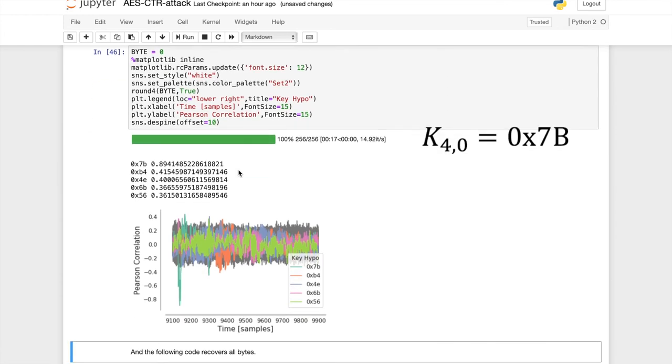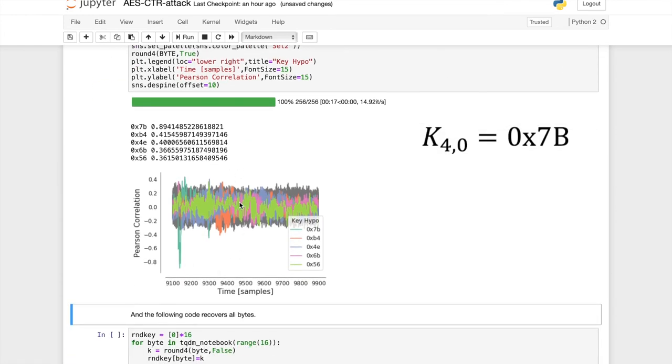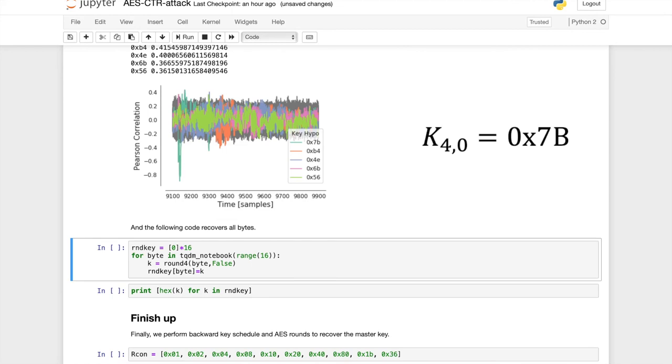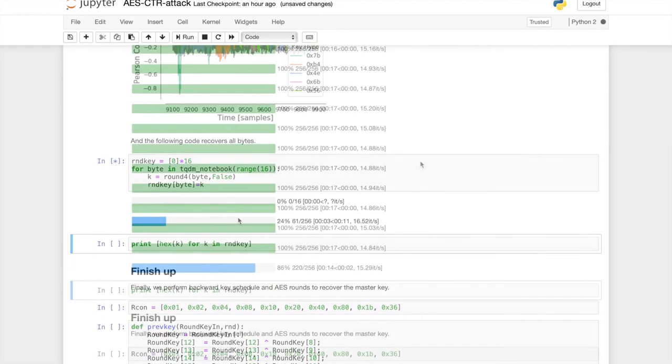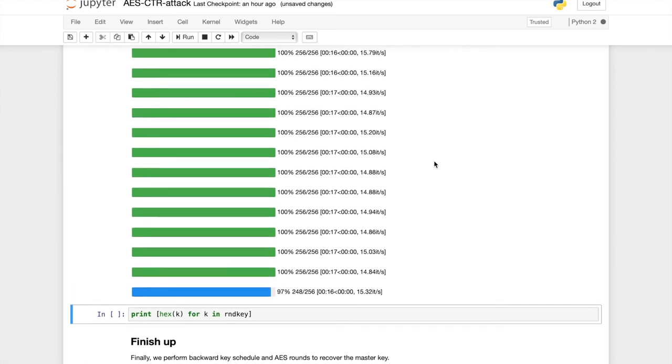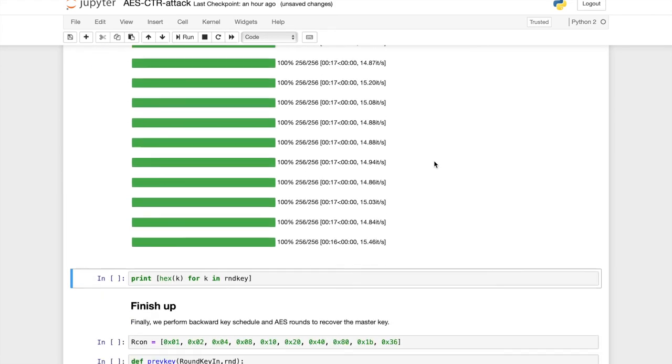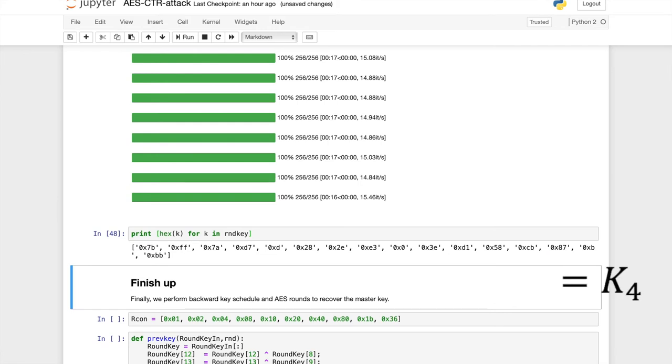And we're using exactly the same set of traces that we were using in the previous step of the attack. So also not the full set. And then the attack works nicely. Again, we will have to do this for all 16 bytes of the state. And that's the last byte. So we have recovered all 16 bytes of the fourth round round key.